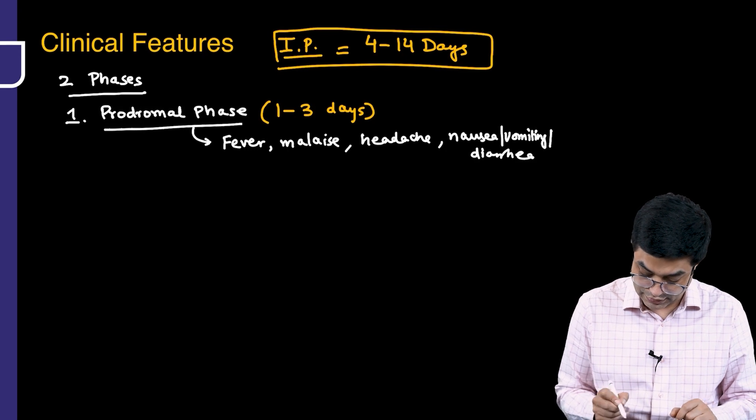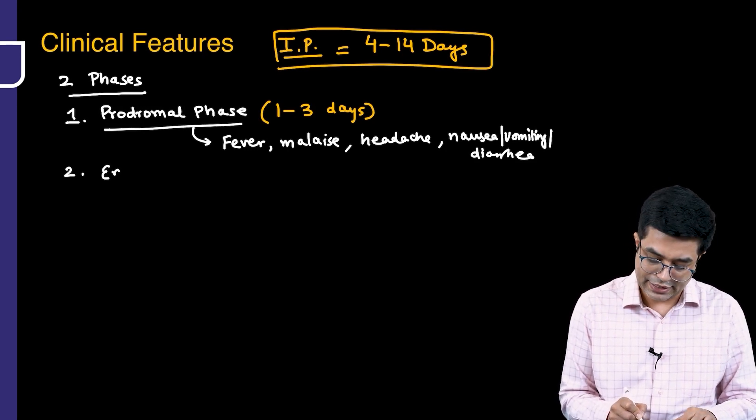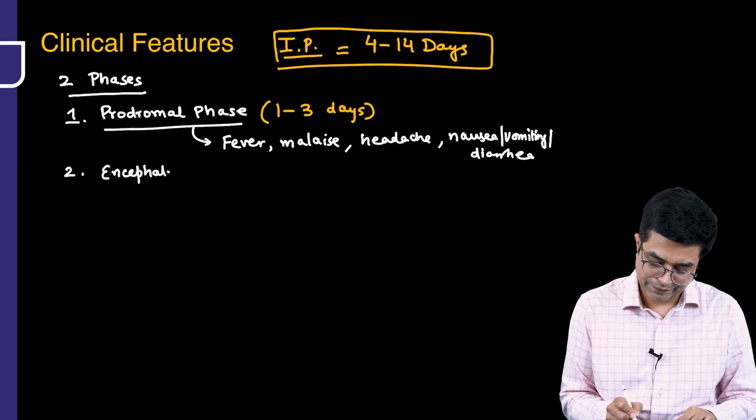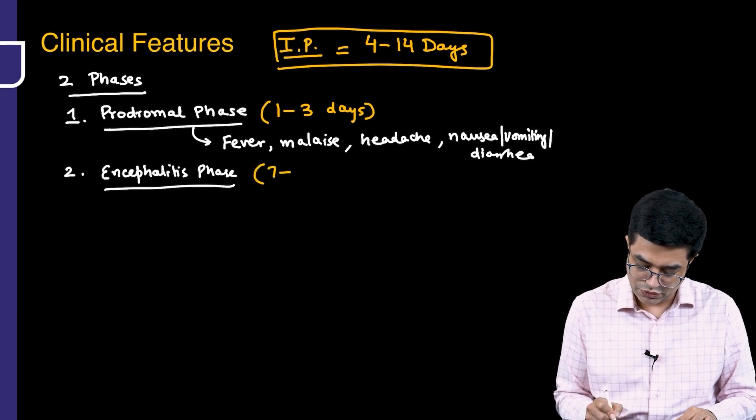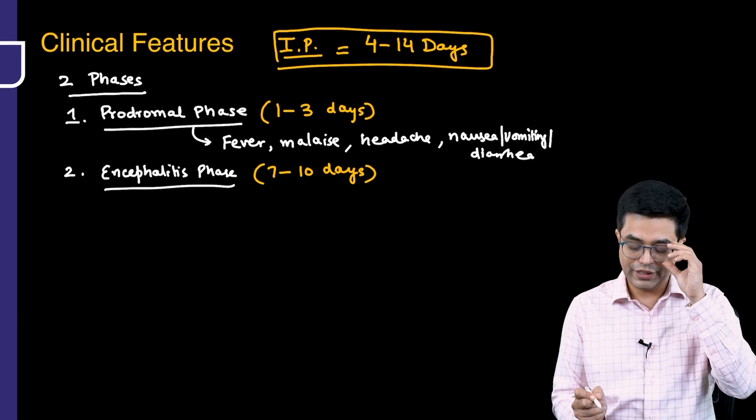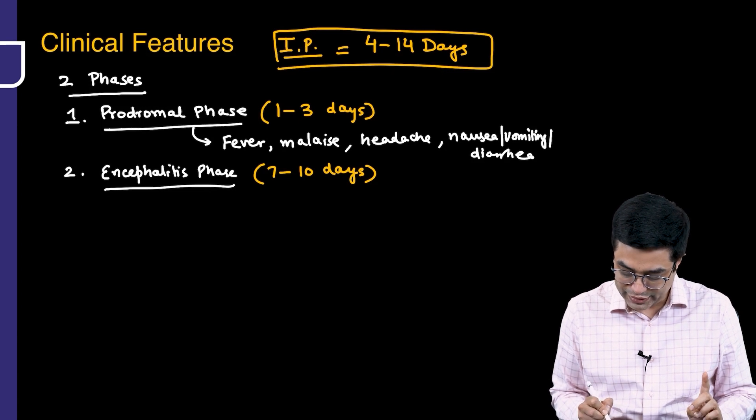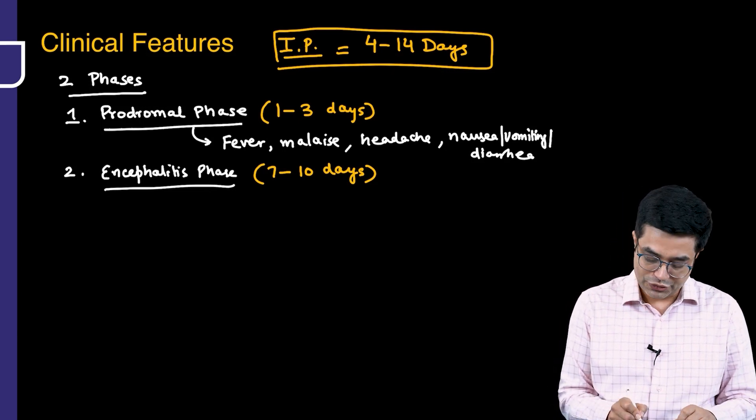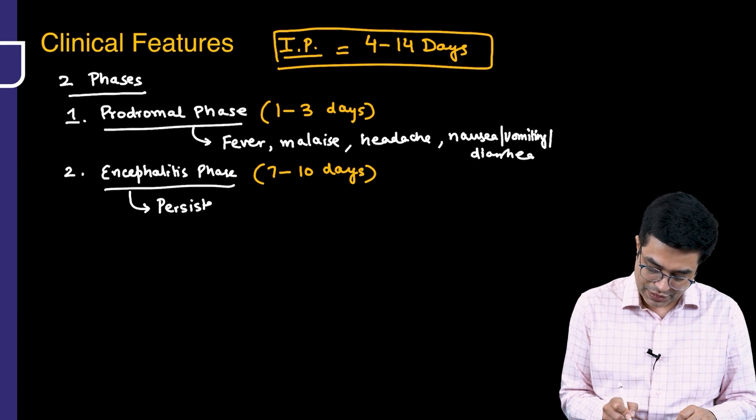The second phase is the dangerous phase, when active CNS features appear - this is called the encephalitis phase. The encephalitis phase lasts from about 7 to 10 days, sometimes extending up to 2 weeks or 7 to 14 days in certain textbooks. In the encephalitis phase, you will have the usual encephalitis features appearing. The fever will become persistent with daily spikes.